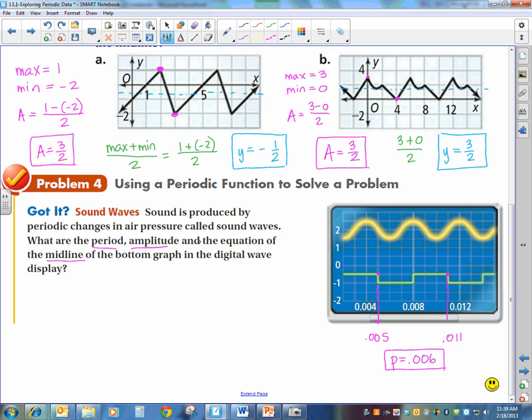My amplitude, what's my max over here? Max looks like it is negative 0.5. My min is negative 1. So I have my max minus my min over 2 and that gives me 0.5 over 2 so my amplitude is 0.25.